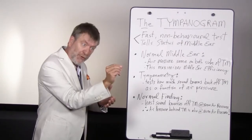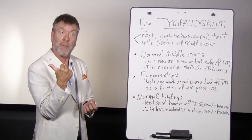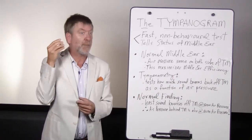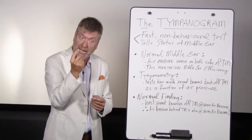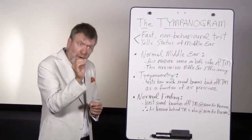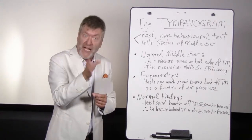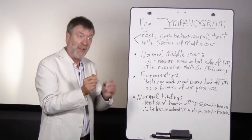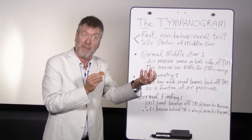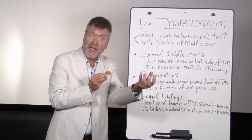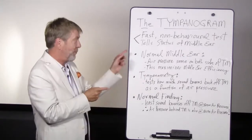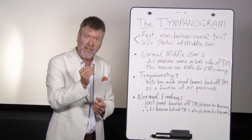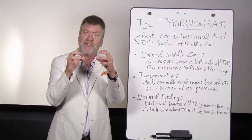When most sound is going through the drum, least is bouncing back off the drum. If you make the air pressure positive to room air pressure to negative air pressure in the ear canal, when the least amount of sound bounces back off the drum, you hope that's the case at normal room air pressure. Because then you'll realize that the air pressure in the middle ear space — the medial side of the eardrum — is also room air pressure. The middle ear is most efficient at passing sounds when air pressure is even on both sides of the tympanic membrane.